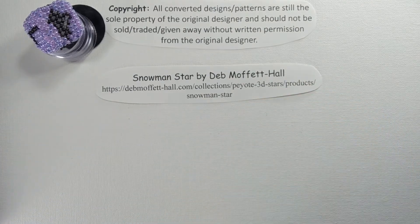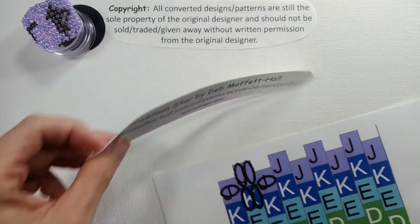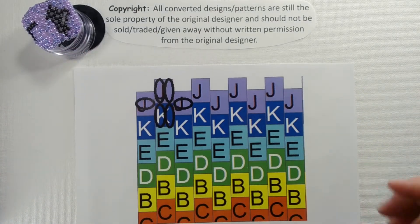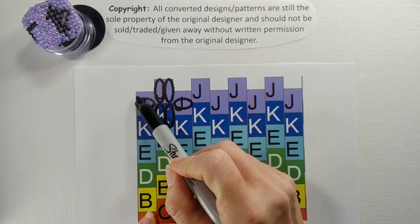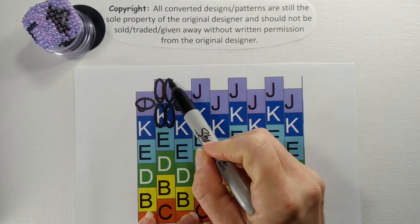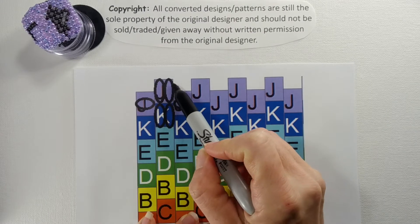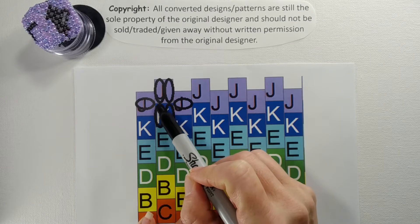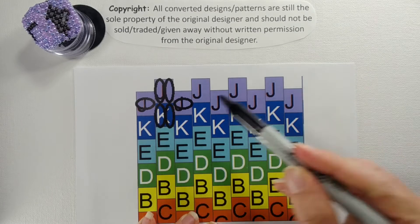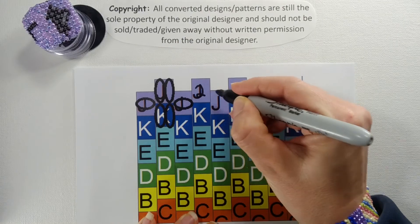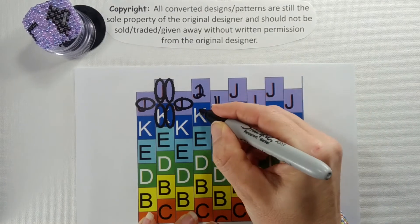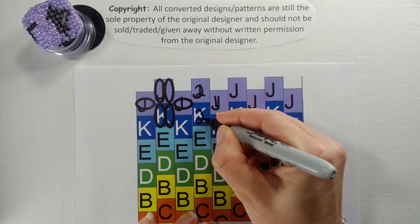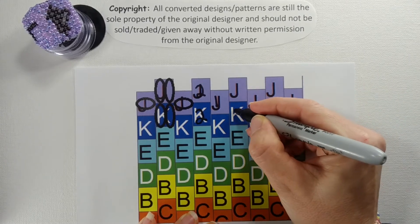Now when reading a pattern for this — I've drawn here — for the first set you would do one bead here, and then you'd add two beads for this one. So that would be two beads here, one for here, one for here, and two for here.